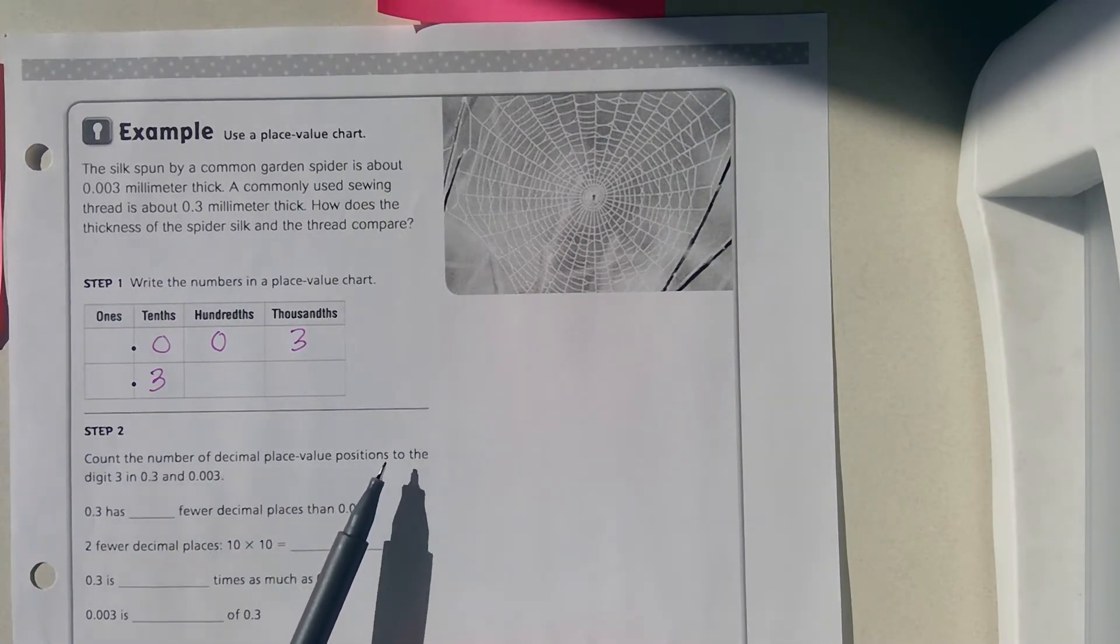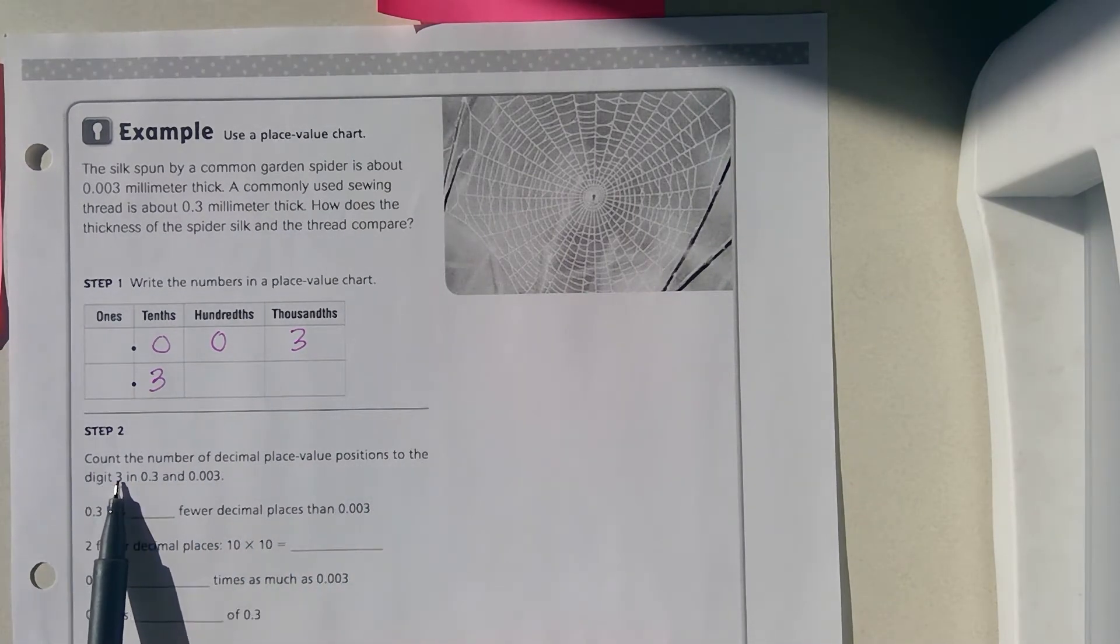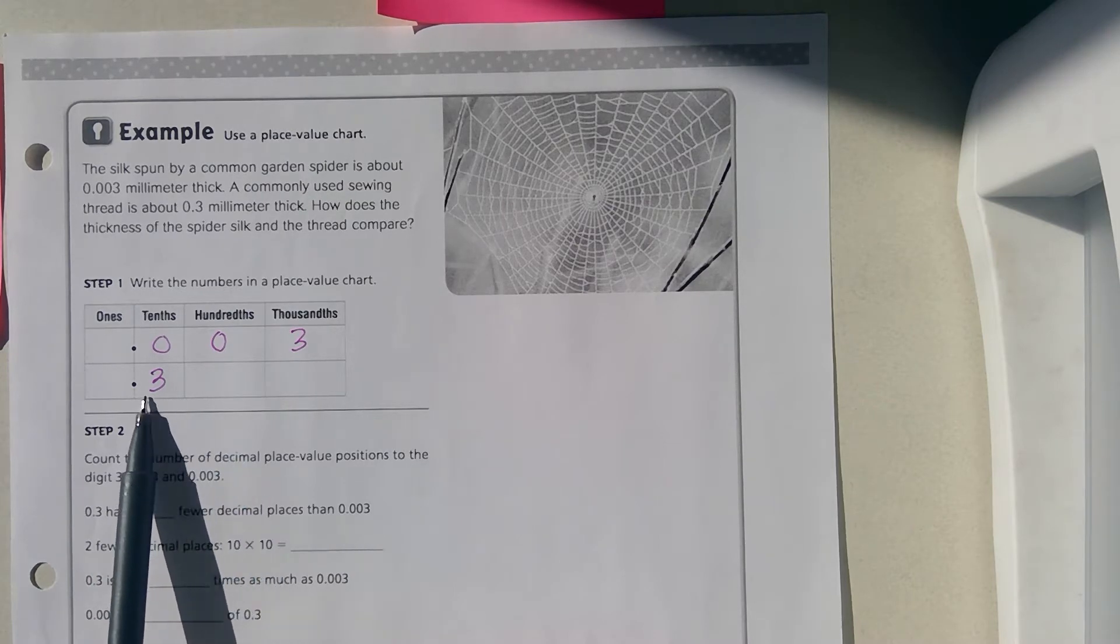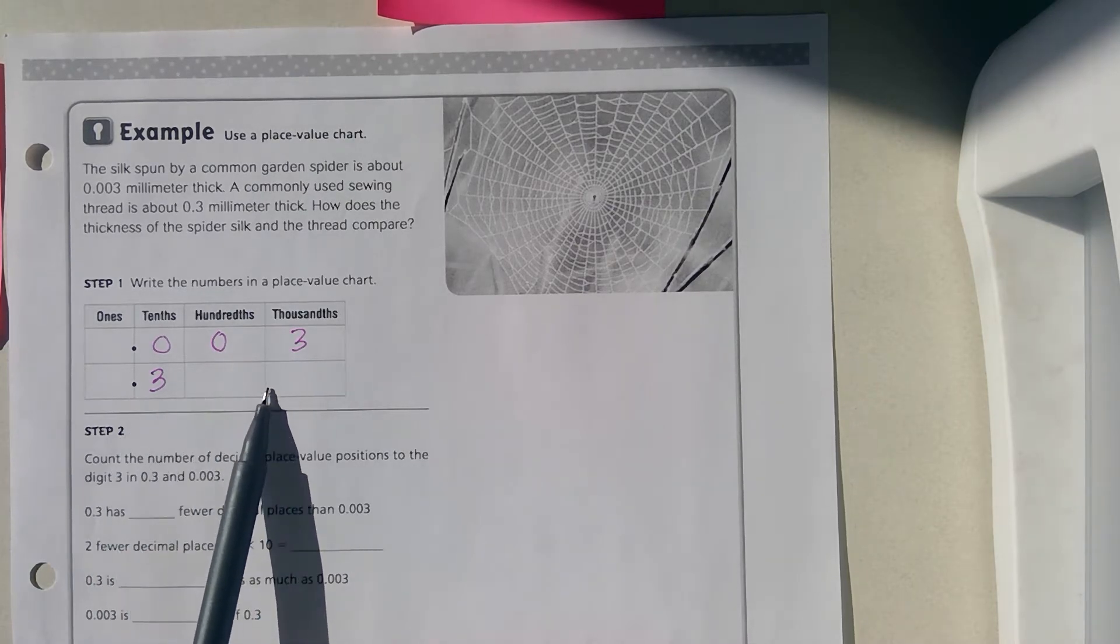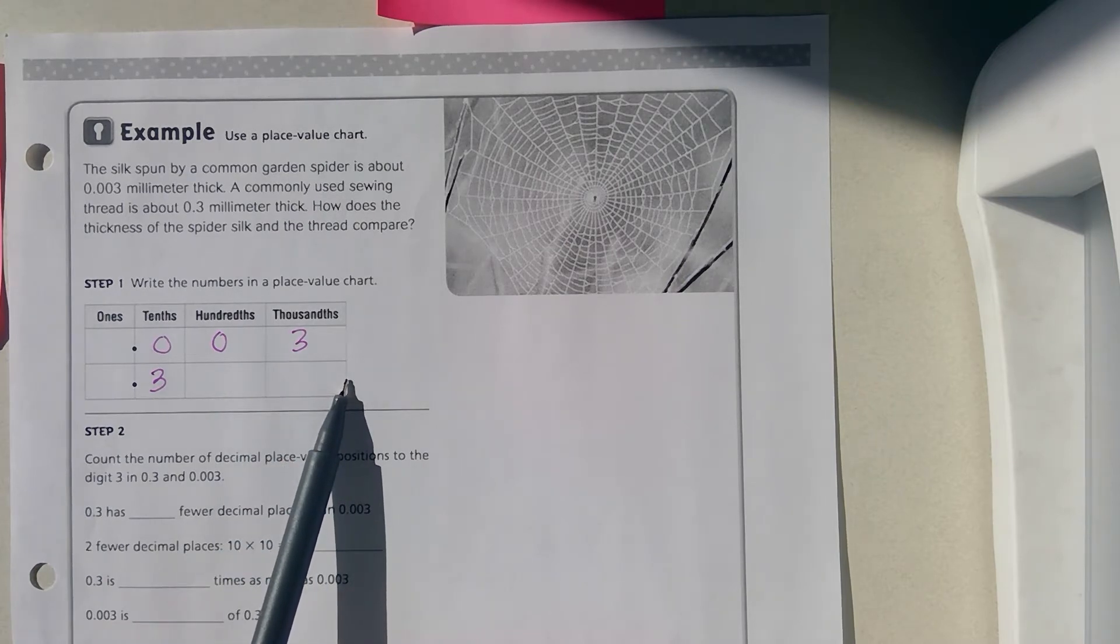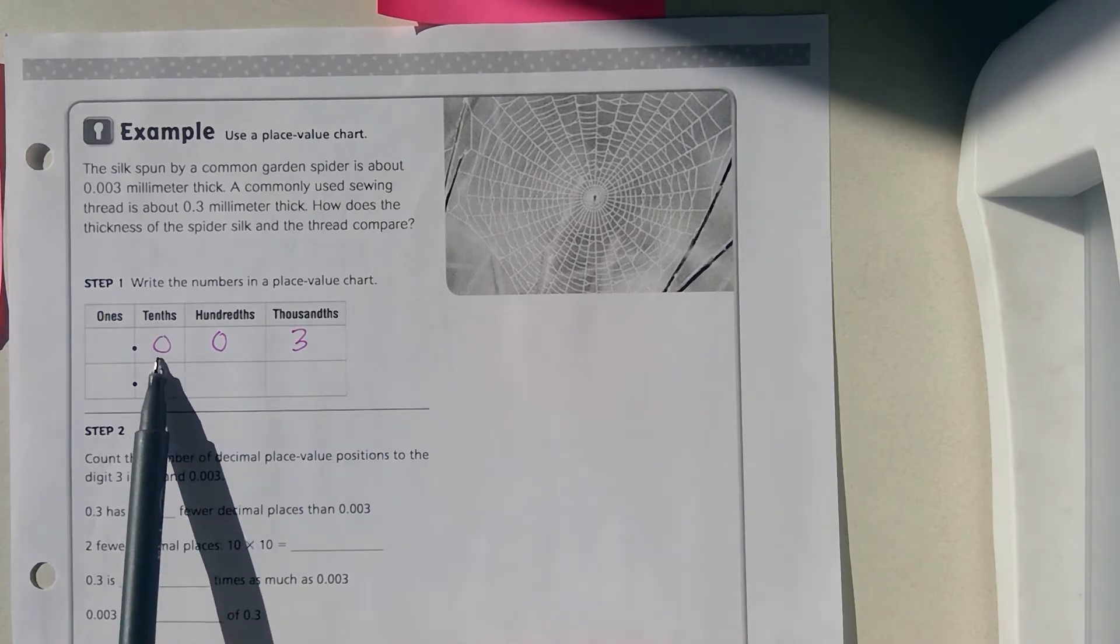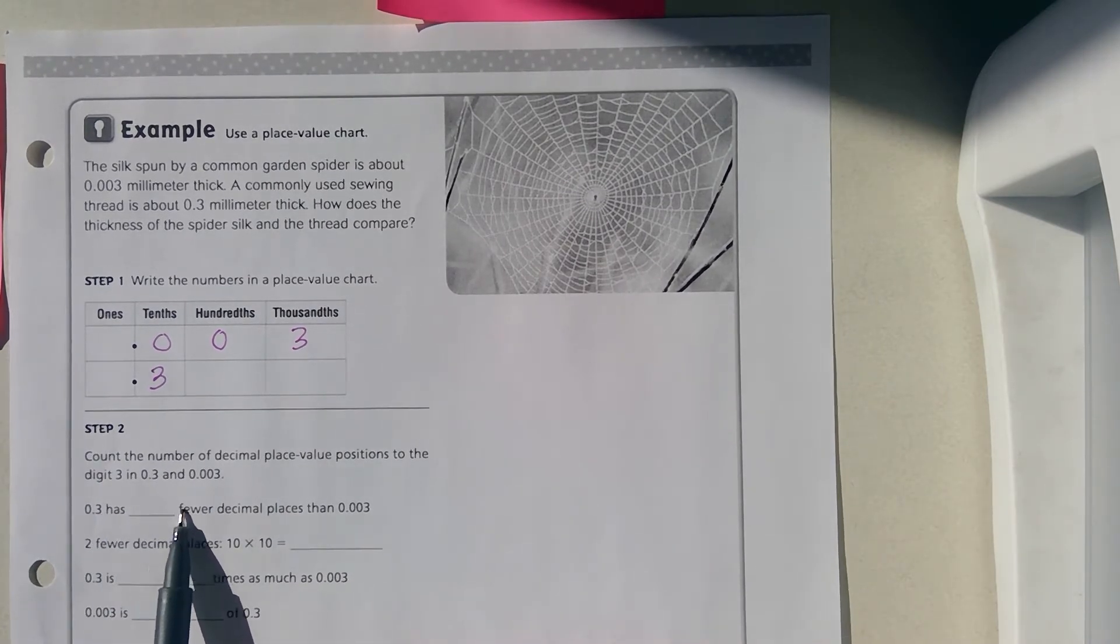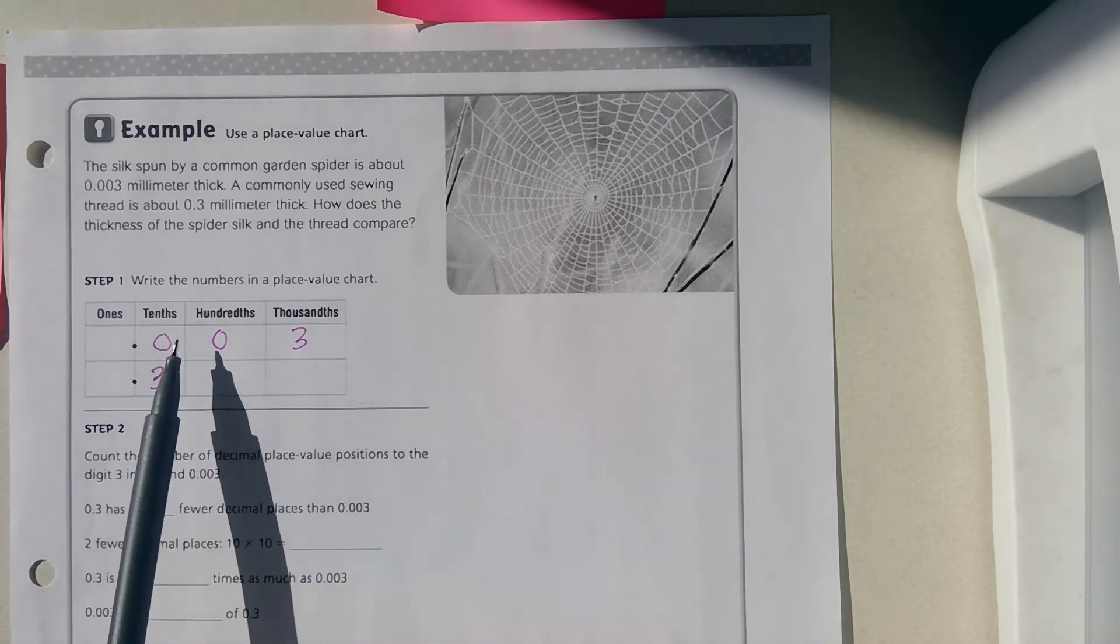Count the number of decimal place value positions to the digit three in three tenths and three thousandths. We have one, two, three decimal places here. So point three has two fewer decimal places than point zero zero three.